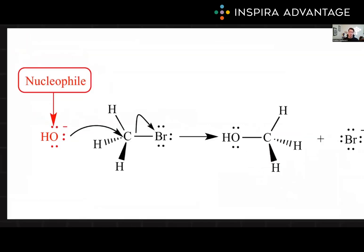Nucleophiles are molecules or ions that possess a lone pair of electrons — shown here as those two dots — or a pi bond, that are attracted to positively charged centers, commonly referred to as electrophiles. A nucleophile is what its name says: it's nucleus-loving. The nucleus is positively charged, so it loves positively charged things. It can attack and form a bond with electrophiles, resulting in a new covalent bond.